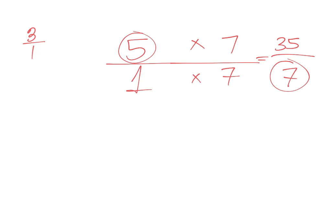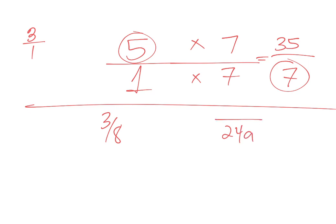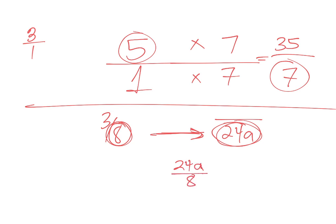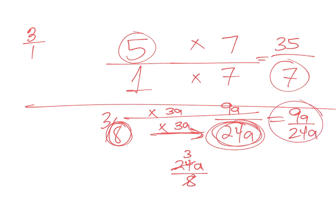Example 8: express 3/8 as an equivalent fraction with denominator 24A. To find the multiplier, divide 24A by 8 — eight goes into 24 three times, so you're multiplying by 3A. Multiply the denominator: 8×3A = 24A. Multiply the numerator: 3×3A = 9A. So the answer is 9A/24A.